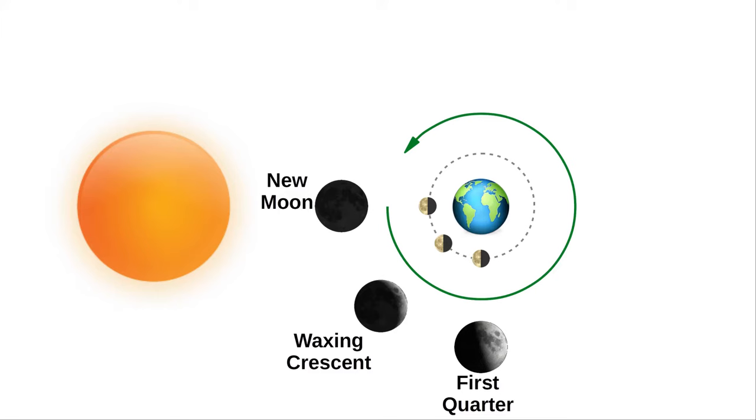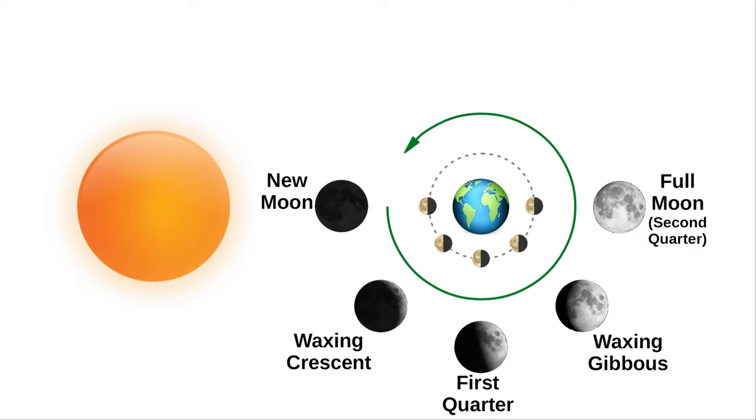We then reach first quarter, where half of the Moon is lit. Gibbous means swollen, so the next one is waxing gibbous. Then we reach full Moon, also called second quarter.